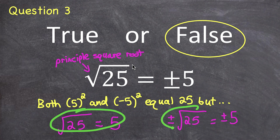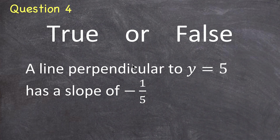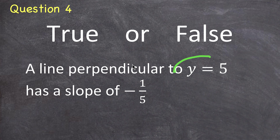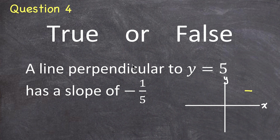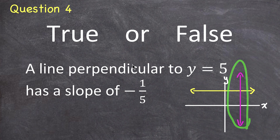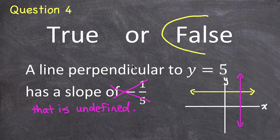So this question is false. Question 4. True or false? A line perpendicular to y equals 5 has a slope of negative one over five. The line y = 5 is a horizontal line where every y-coordinate is five. A line perpendicular to that would be a perfectly vertical line. The slope of any vertical line is undefined. So the correction is: it doesn't have a slope of negative one over five — it has a slope that is undefined. This question is false.